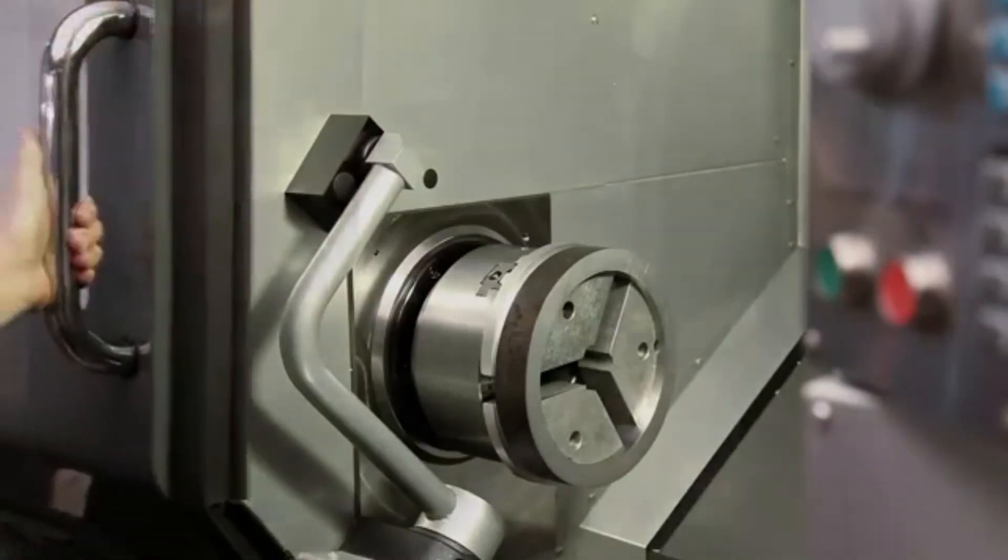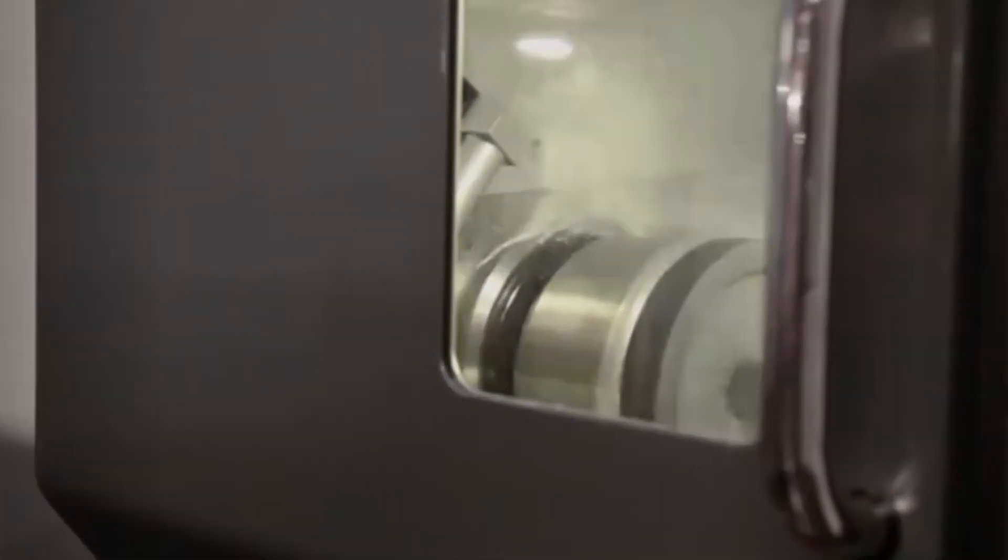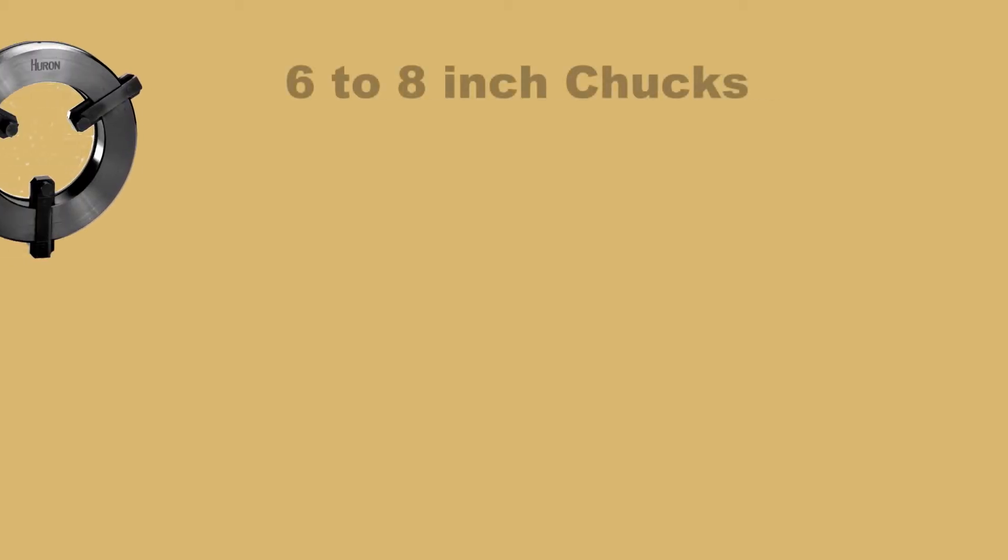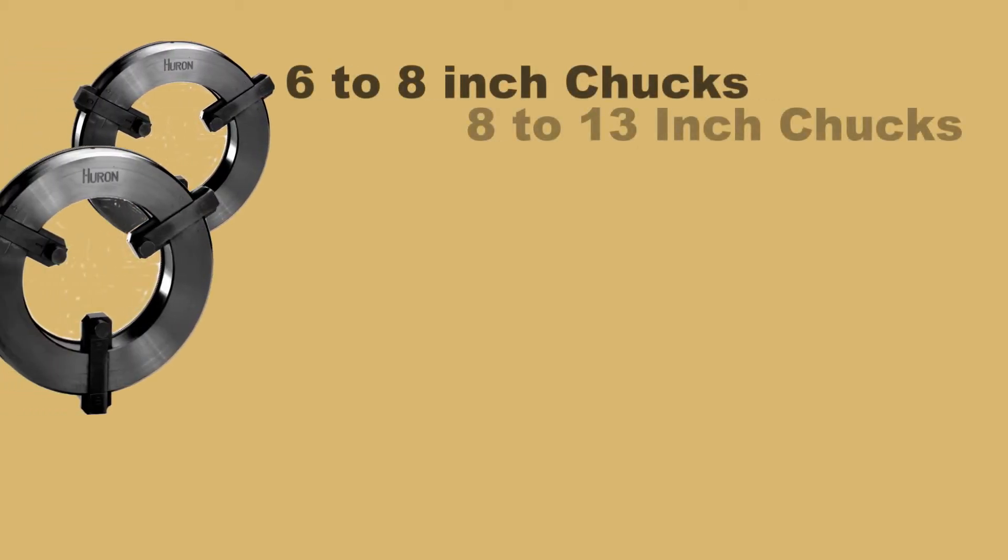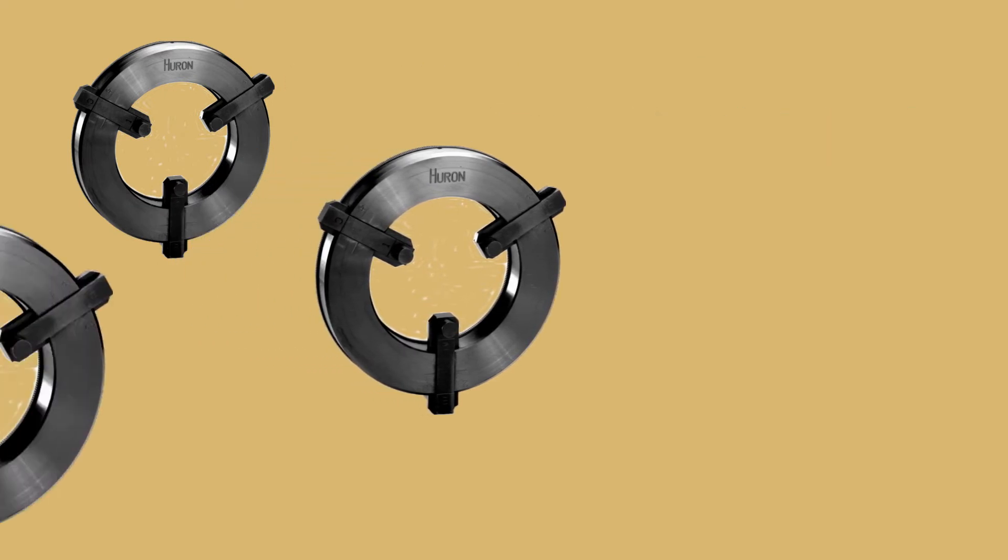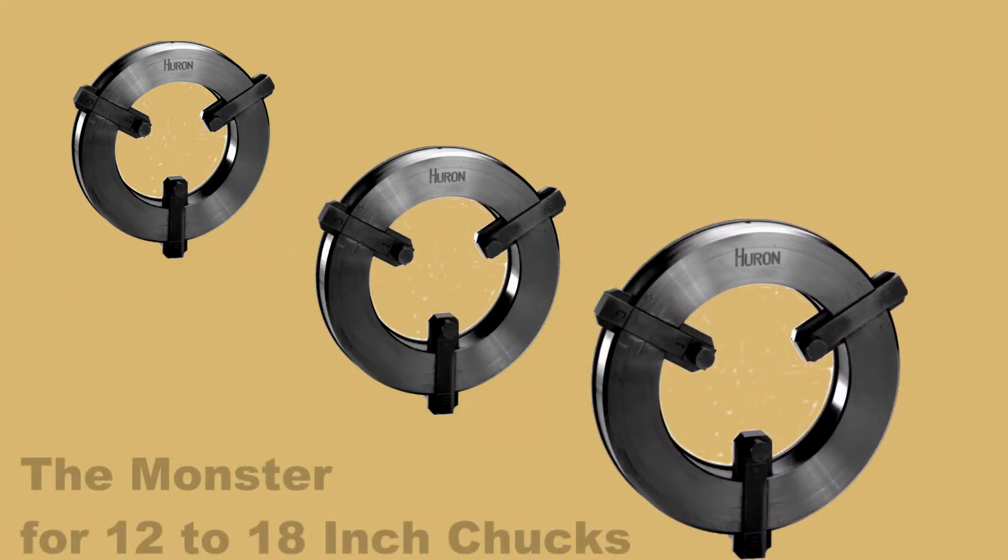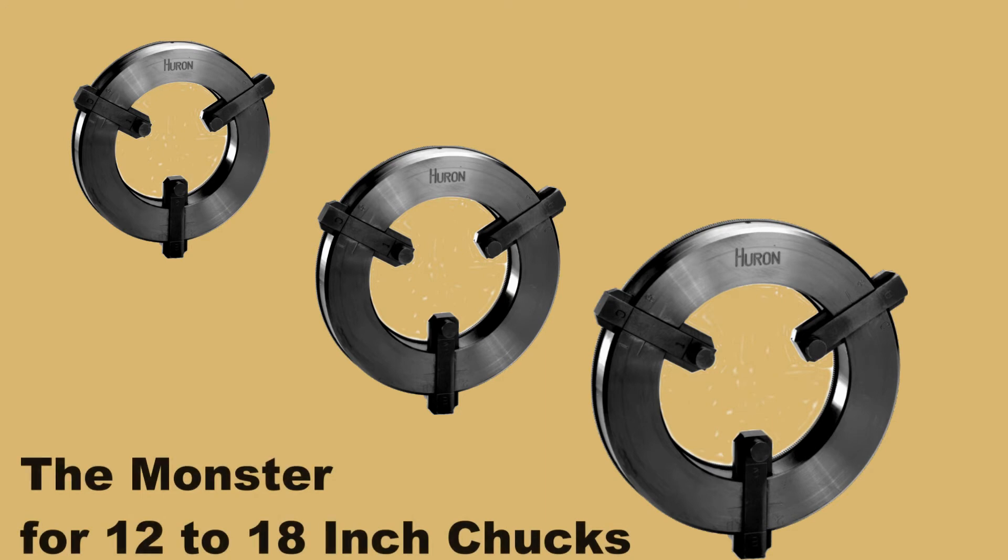Now it's time to make your parts. The Heron Topjaw forming device comes in three sizes. One for 6-8 inch chucks, one for 8-13 inch chucks, and the monster for 12-18 inch chucks.